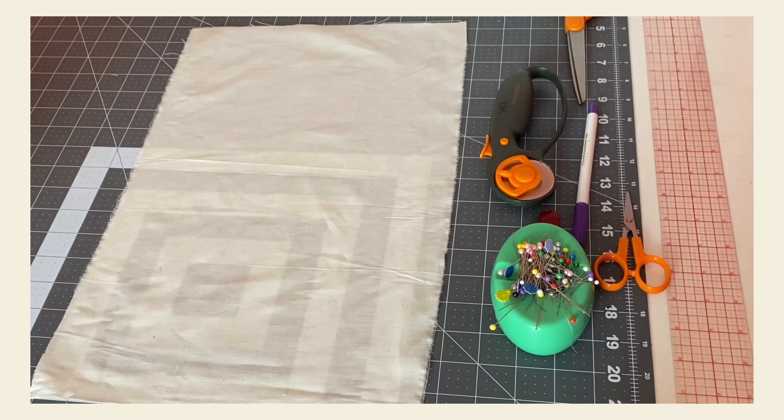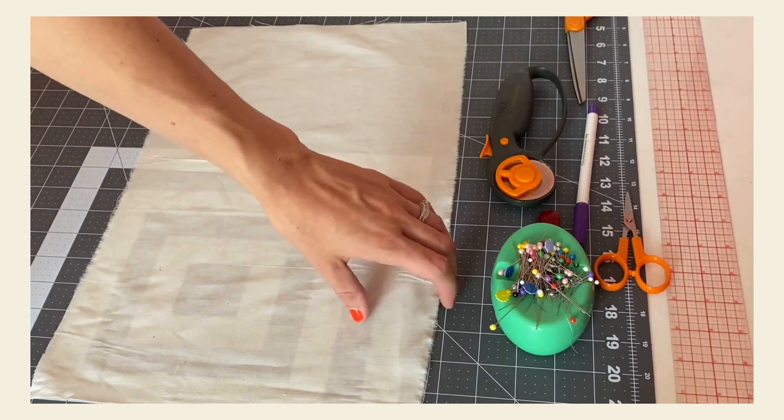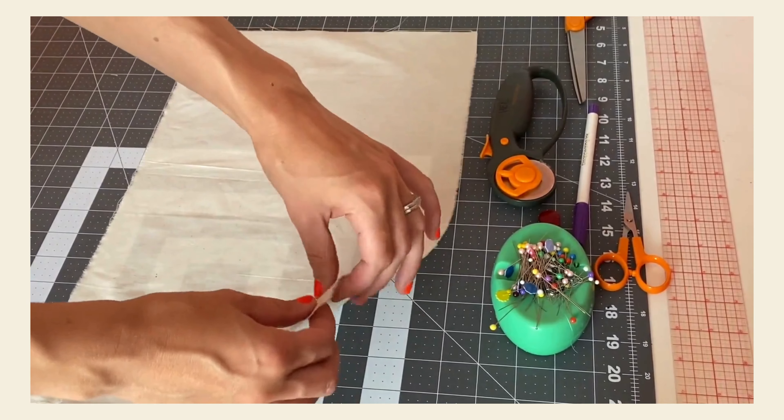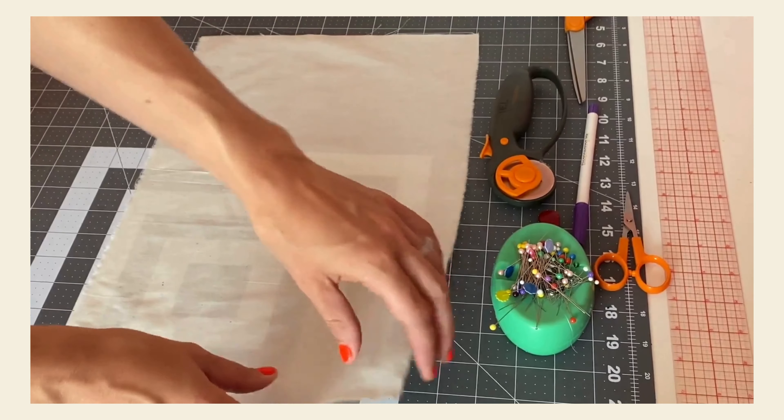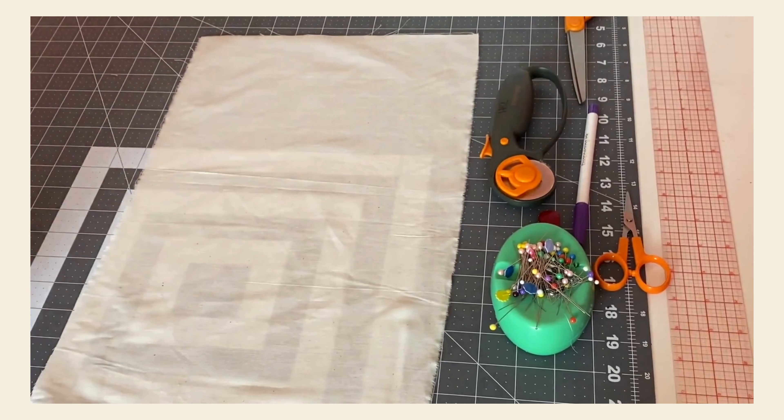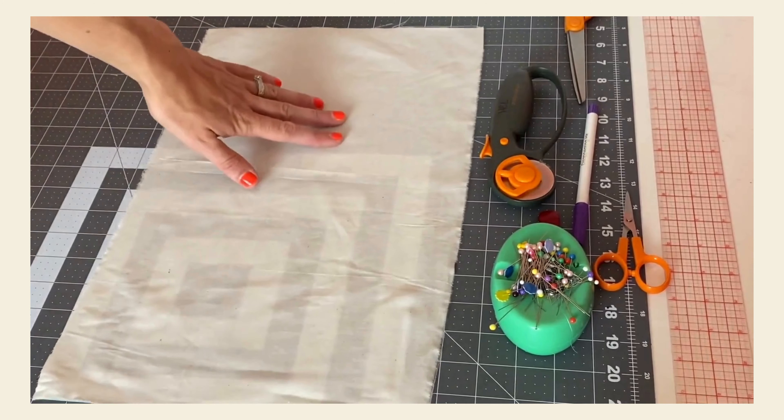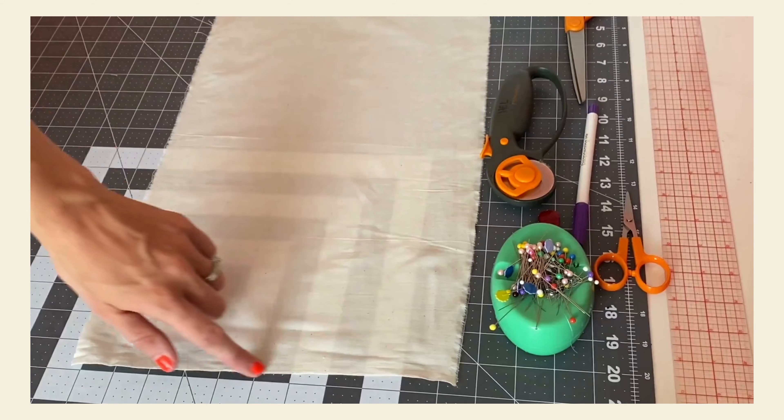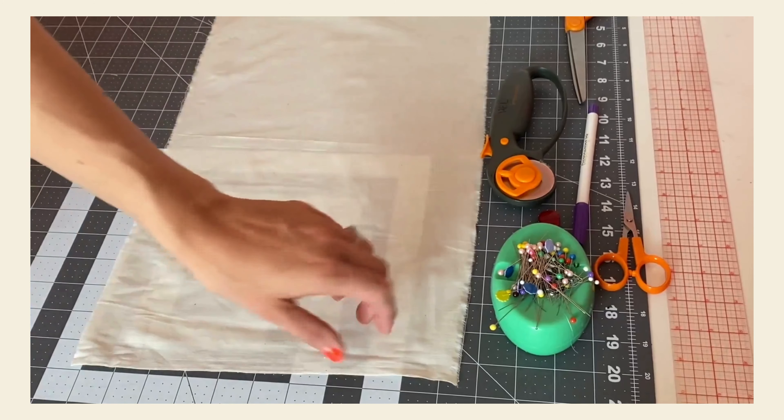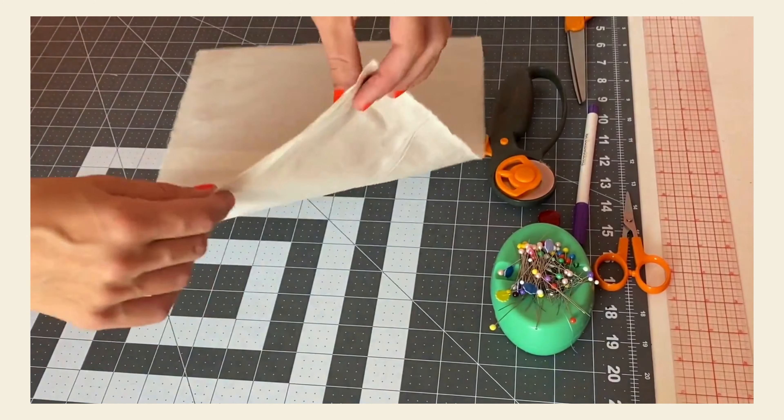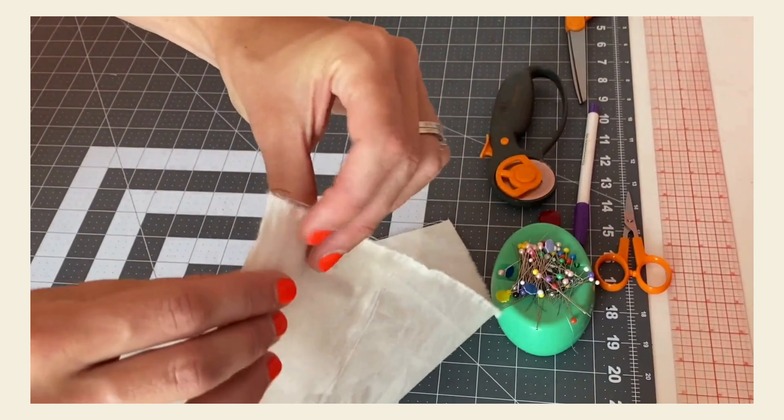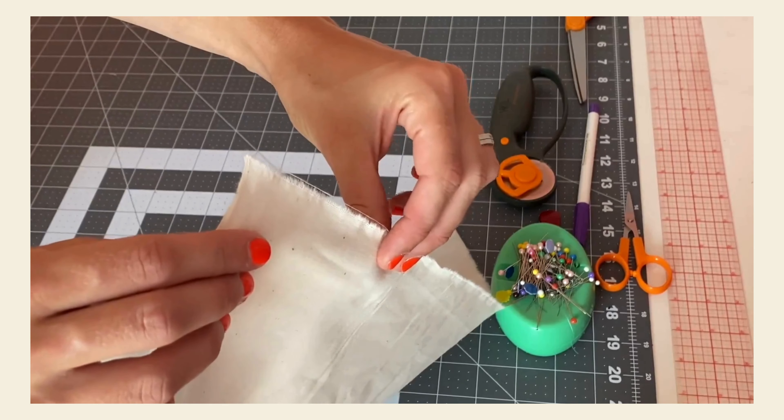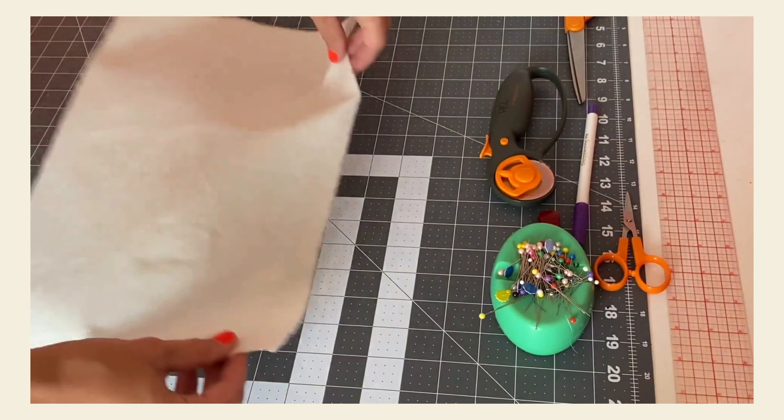Then there's also the crosswise grain line, which runs perpendicular to the selvedge. You'll find that the lengthwise grain line is slightly stronger than the crosswise grain line, meaning that there's just more stretch perpendicular to the selvedge than parallel to it. You can test this out. The selvedge is easy to locate because it's the edge of the fabric that does not fray.